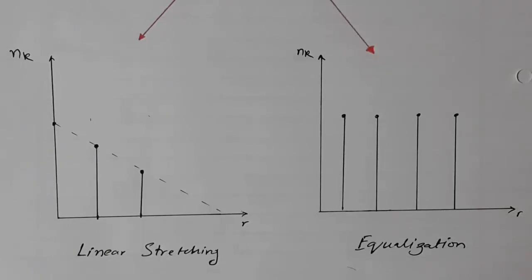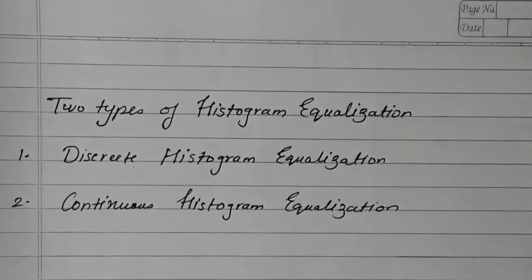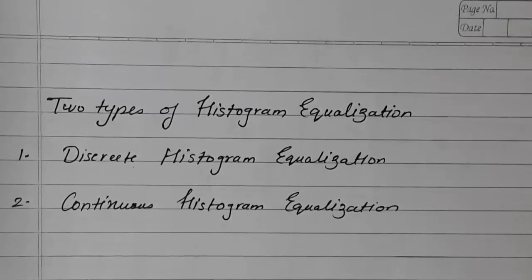Now we will have a look at one example of performing equalization. Histograms are of two types: discrete histogram and continuous histogram, and the equalization methods for both types are pretty much different. In this video we are going to learn about the discrete histogram equalization technique, and in the next video we will learn the continuous histogram equalization technique.